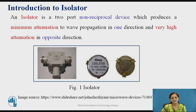Now, what is an isolator? An isolator is a two-port non-reciprocal device which produces minimum attenuation to wave propagation in one direction and very high attenuation in the opposite direction.